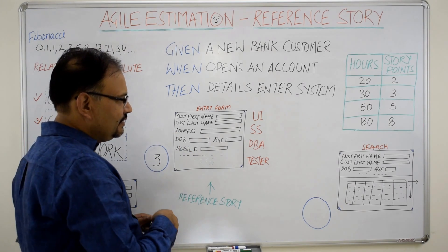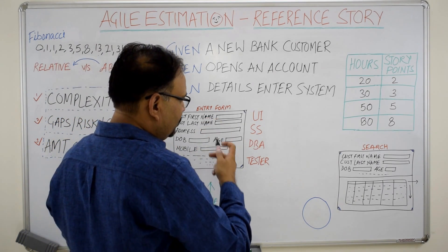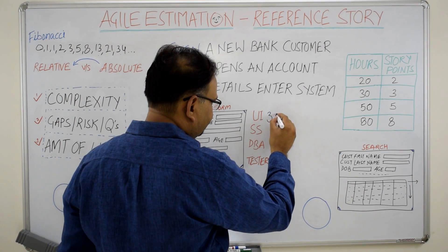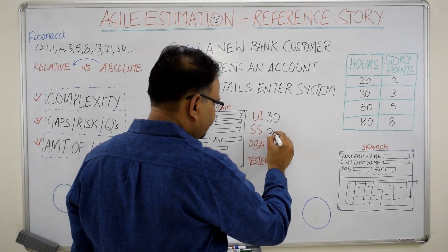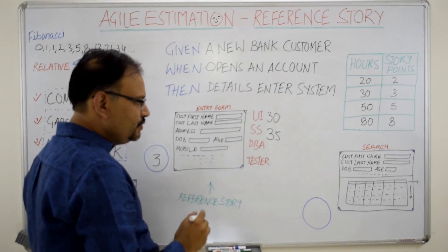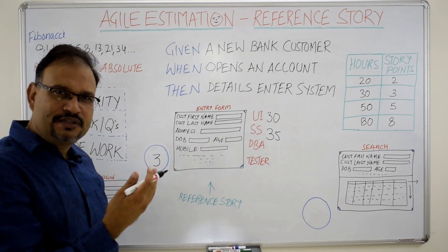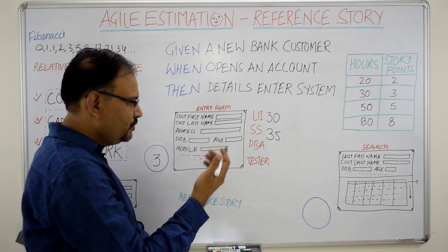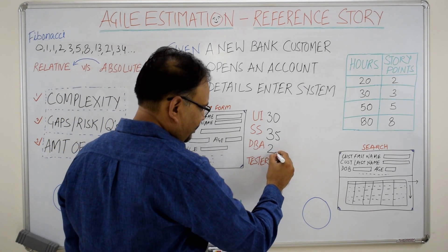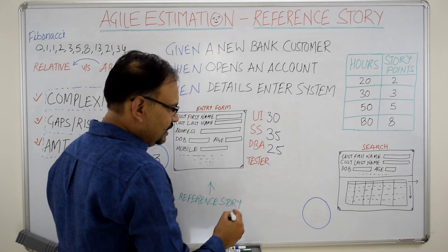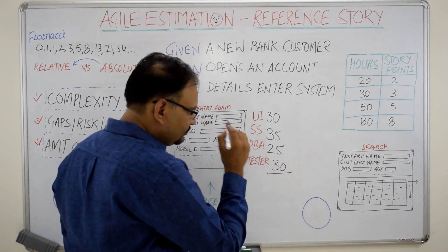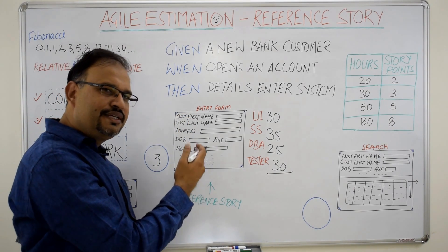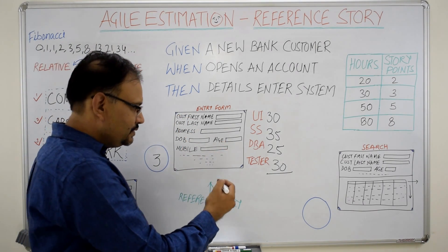Now UI developer may say that the end to end estimate of this story is 30 hours. Java server side may say 35, DBA who is not very close enough to the end to end functional team may give some number less or more say he is giving 25 hours, tester is giving 30 hours.